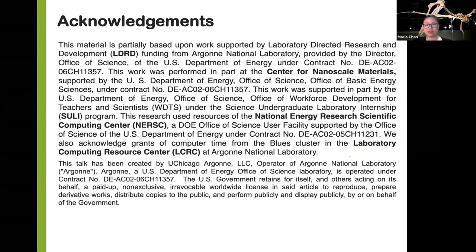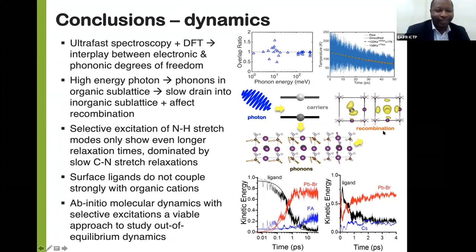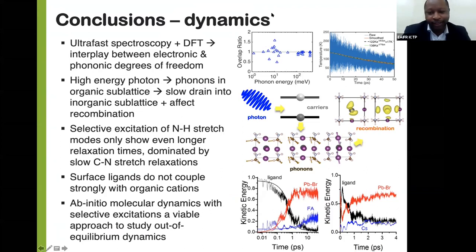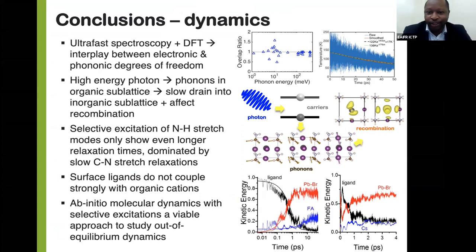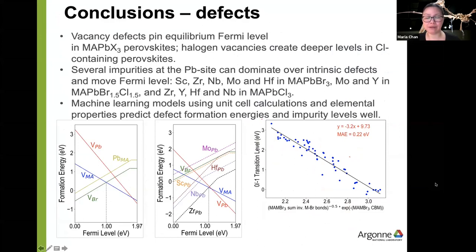Thank you very much. We'll take questions. There are a couple of questions in the chat. From John Bosco: how does the computation using descriptors compare in accuracy with expensive DFT calculations? What are your errors? Transition levels are typically predicted to about 0.2 to 0.3 eV, and formation energies to about 0.4 to 0.5 eV. This is pretty good because DFT itself has errors — we're training on DFT data, so all the DFT errors are already encoded. The machine learning error is usually about 0.2 to 0.25 eV for impurity levels. The band gap for these materials is only about 1.5 to 2 eV, so this accuracy is quite reasonable.